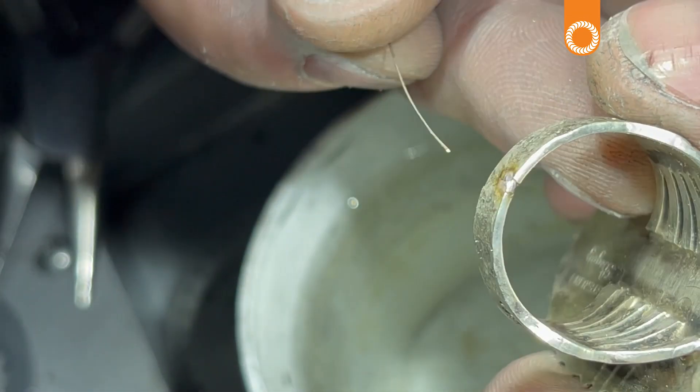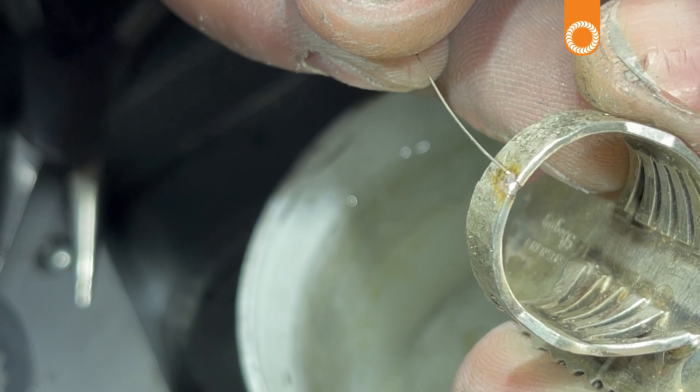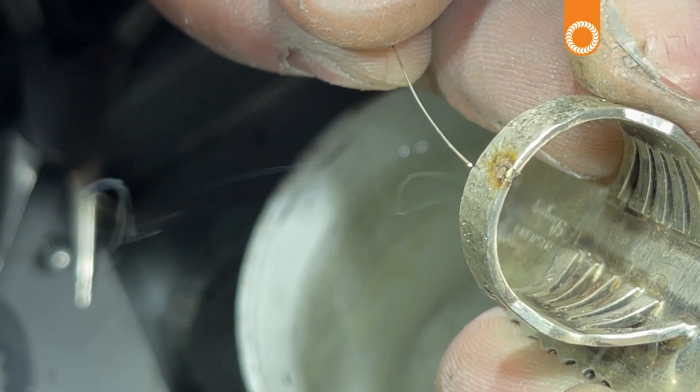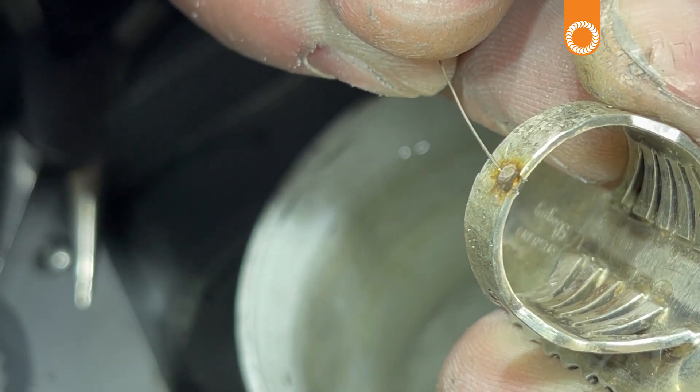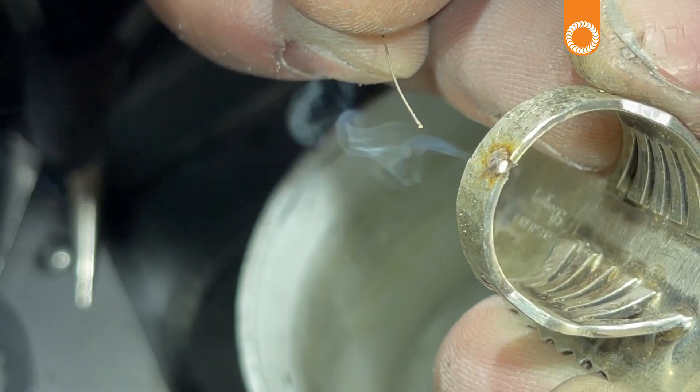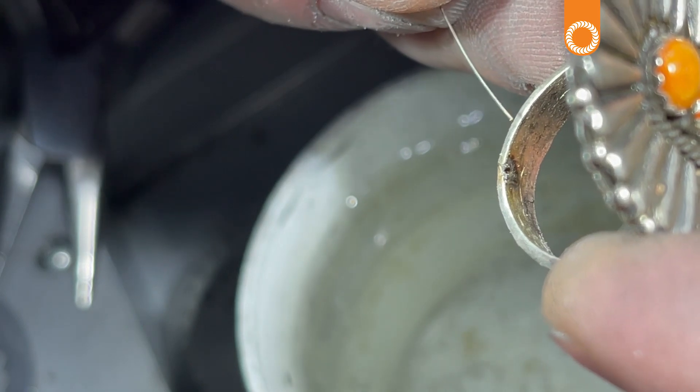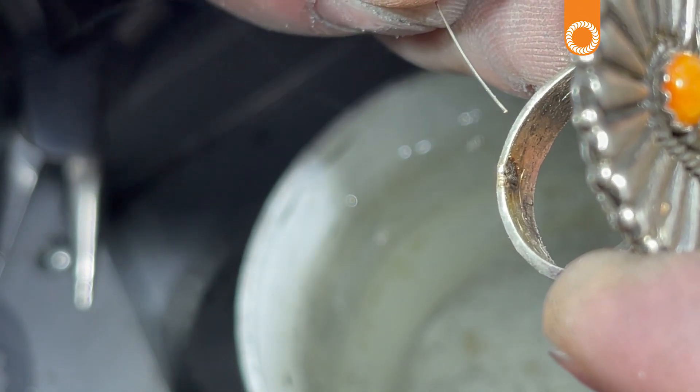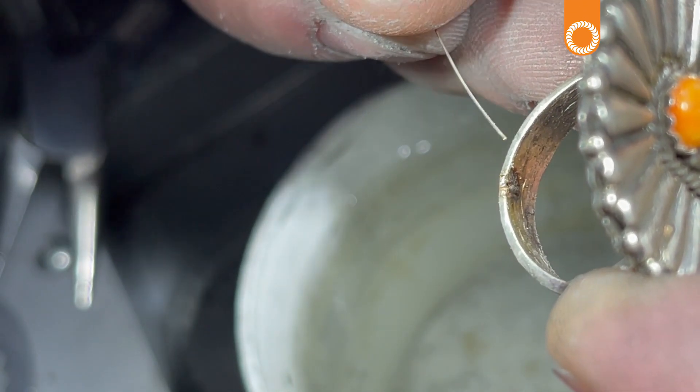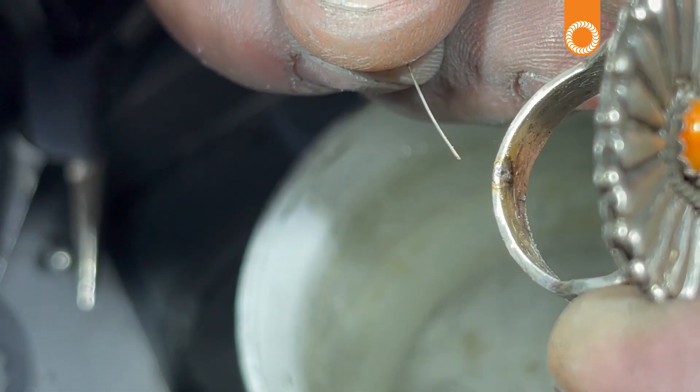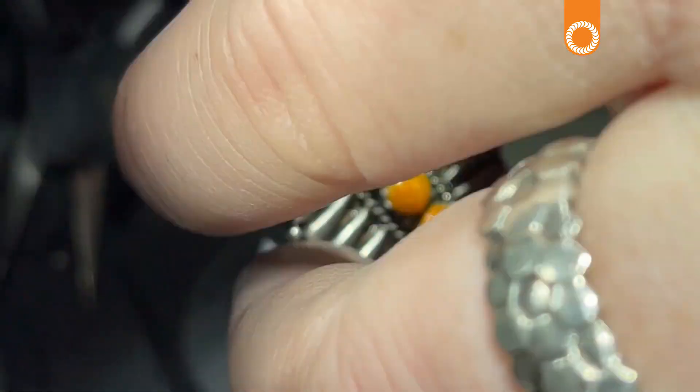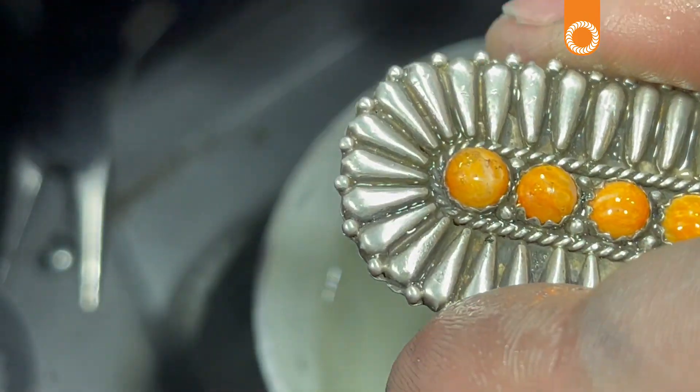So what we'll do is we'll just fix up this little welding mark we've got here. We'll just fill in all those areas where the crack was. Cool off our ring. Again we don't want those stones to come out or get heated up.